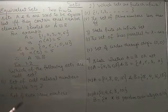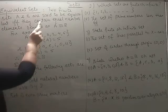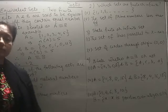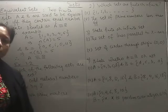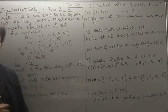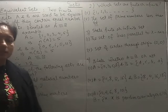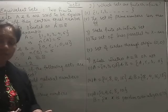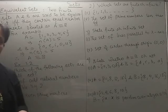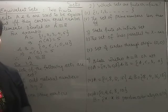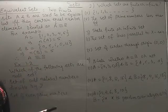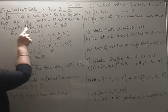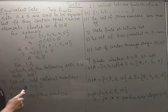The case of equal sets is a particular case of equivalent sets. You will see how. Now if I say two sets are equivalent, it means that the number of elements in one set and the number of elements in the other set have to be equal. Two finite sets A and B are said to be equivalent if and only if they contain equal number of elements.